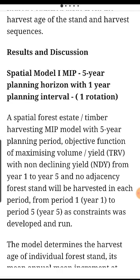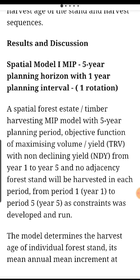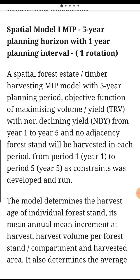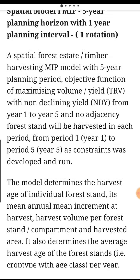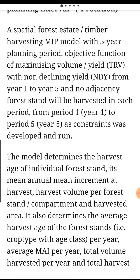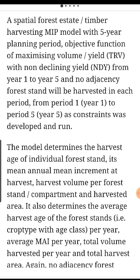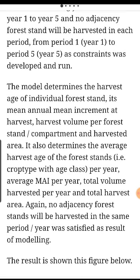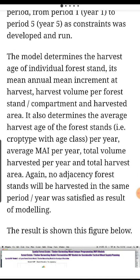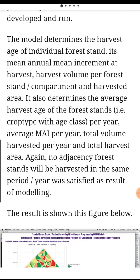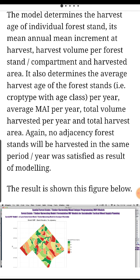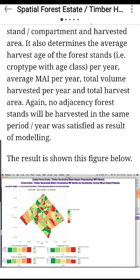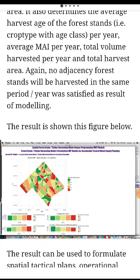Results and discussion. Spatial Model 1 MIP — 5-year model, 5-year planning horizon with 1-year planning interval, 1 rotation. As a spatial forest estate timber harvesting MIP model with 5-year planning period, objective function of maximizing volume yield (TRV) with non-declining yield from year 1 to year 5 and no adjacency constraint. The model determines harvest age of individual forest stands, mean annual increment at harvest, harvest volume per forest stand, compartment and harvested area.